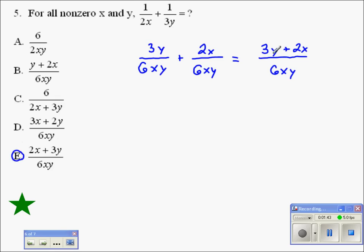And if you get confused, if you think 3y plus 2x is not the same as 2x plus 3y, we know the commutative property of addition tells us they are the same. You can add terms in any order.